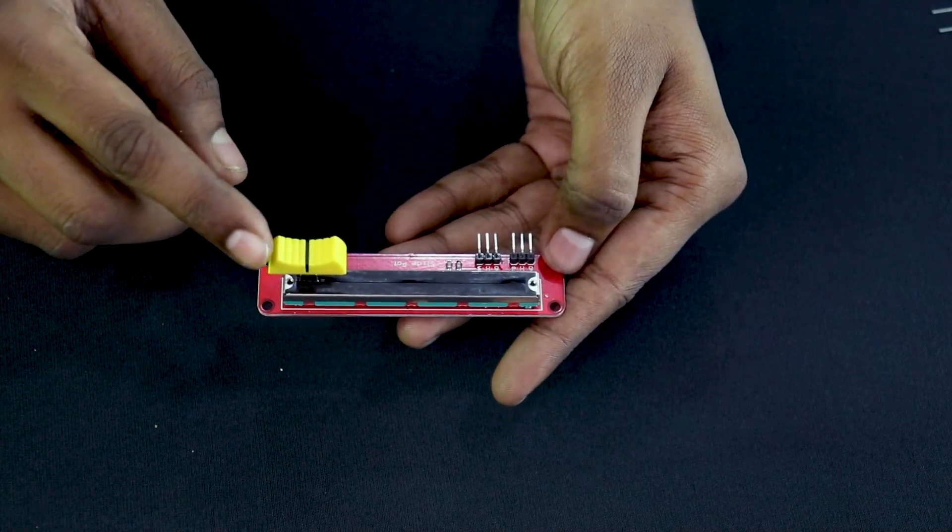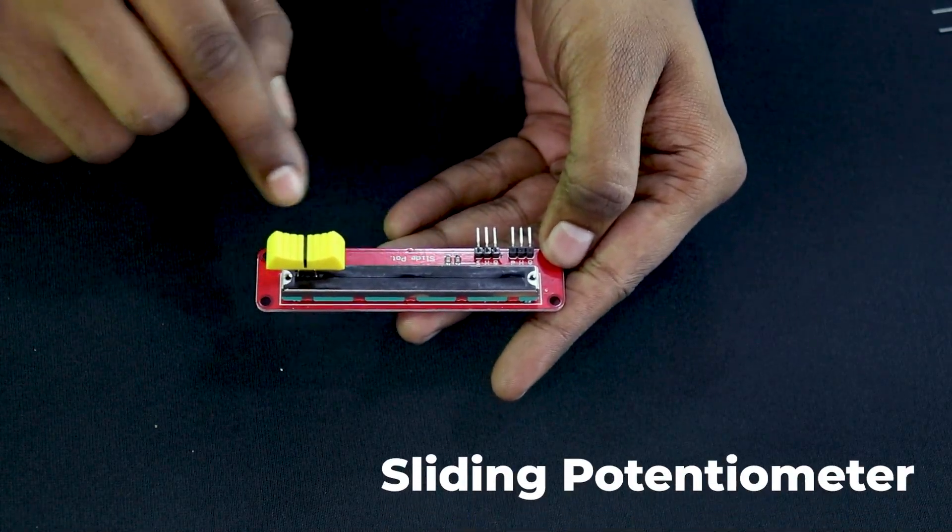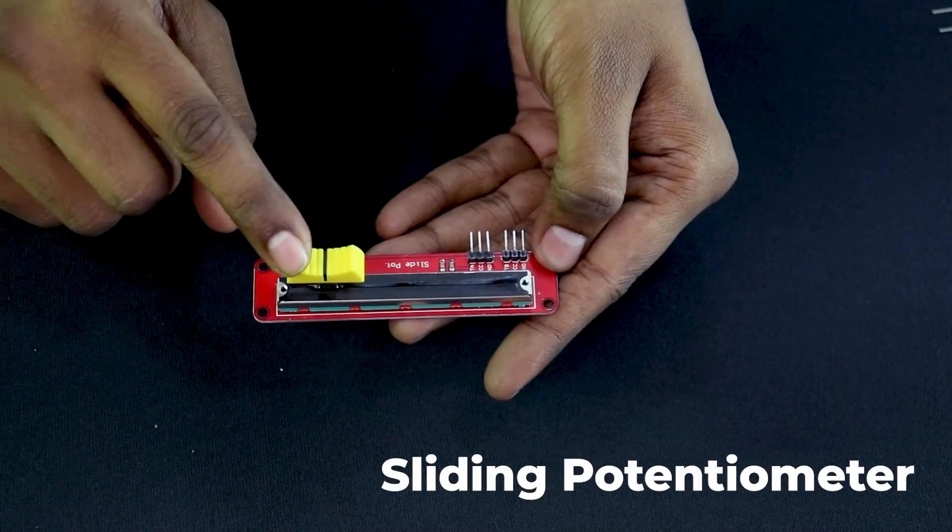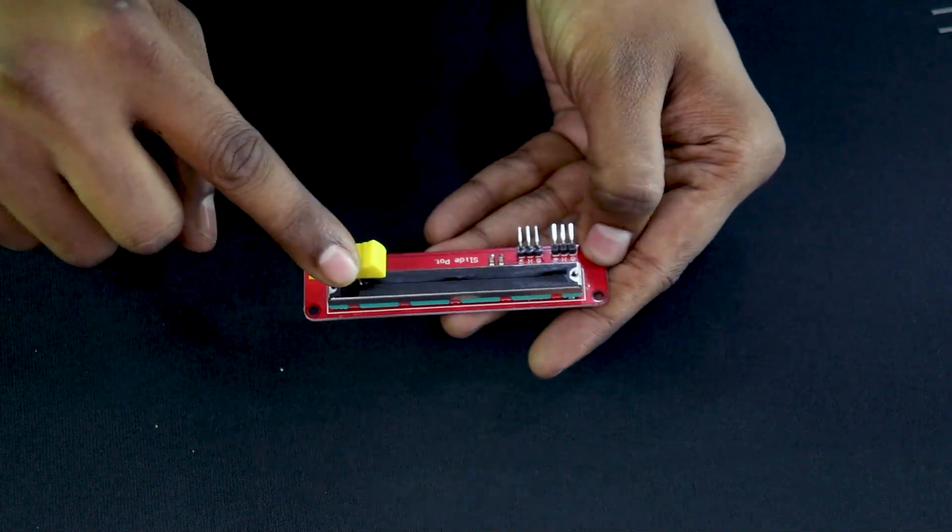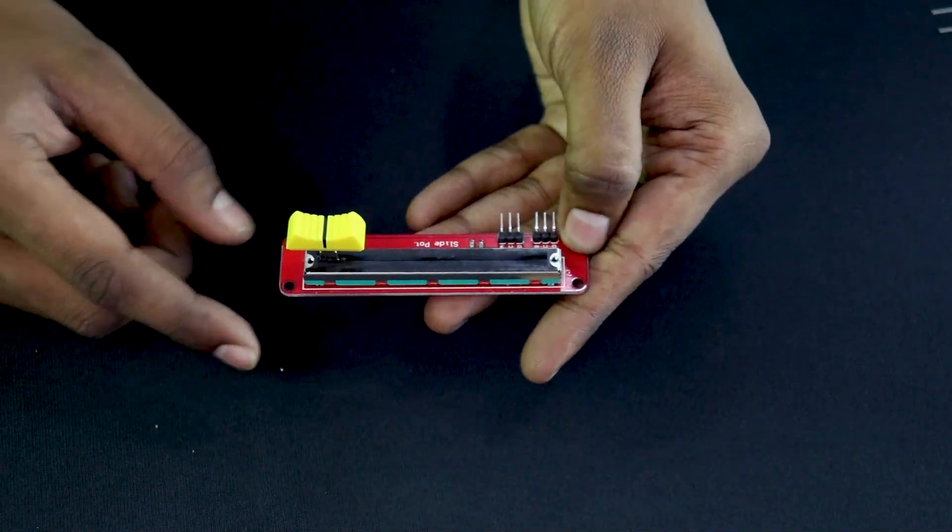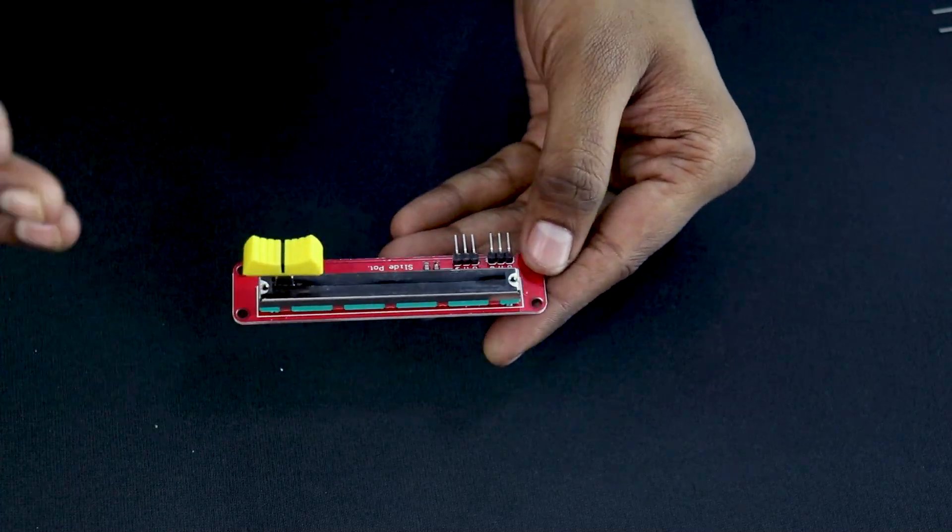So this is a sliding potentiometer which means that its resistance will increase or decrease depending upon how I move it or slide it. So this has a translating motion like this and the resistance will depend upon this. So guys that's it for the video. Make sure to like the video and subscribe to the channel for more informative content. Stay safe, stay tuned at robo.f